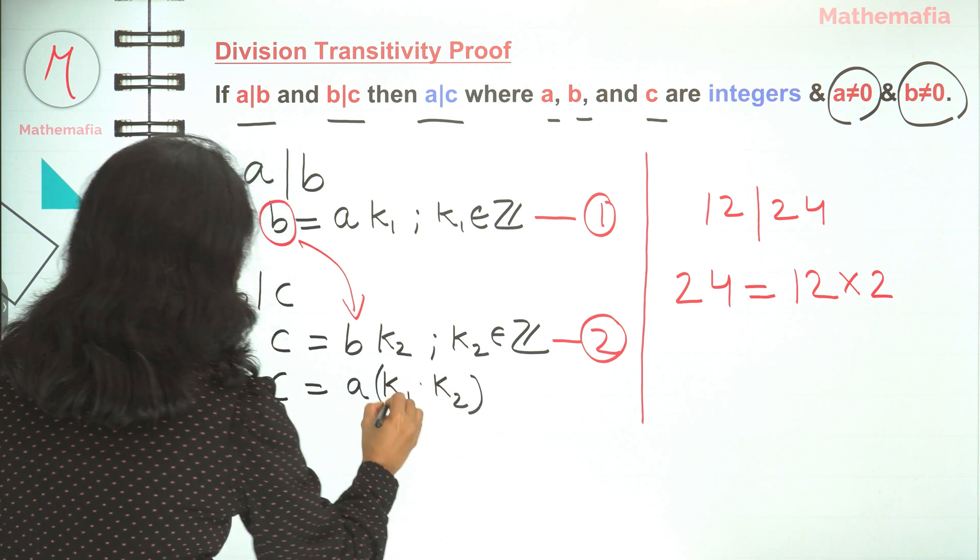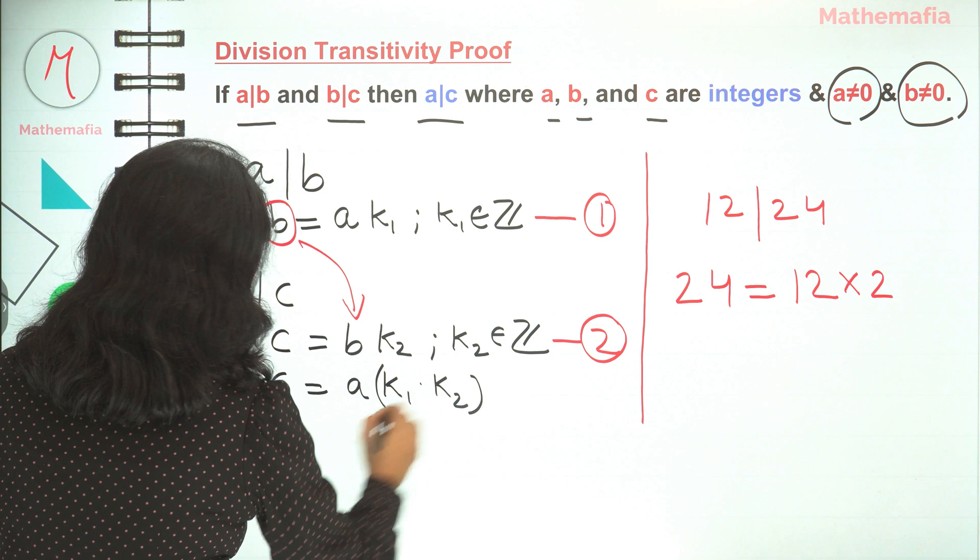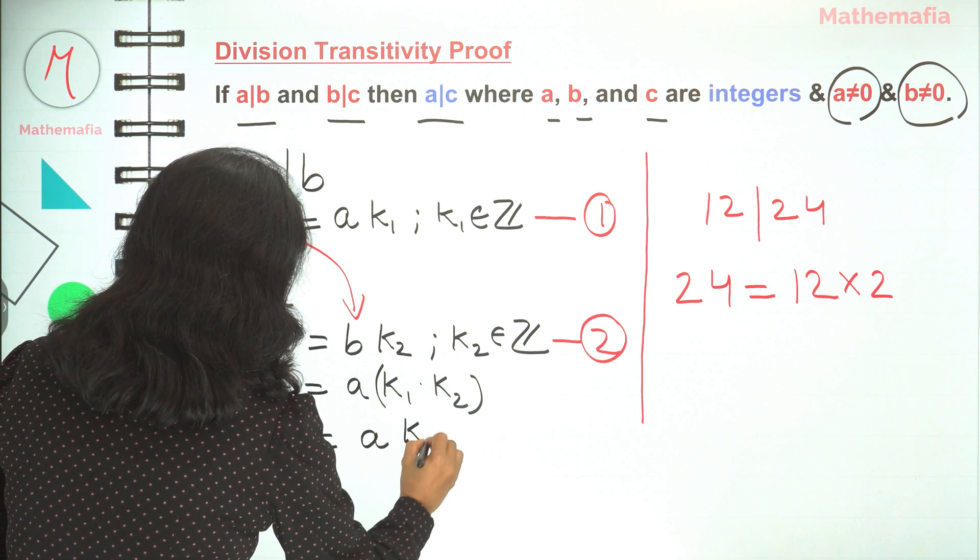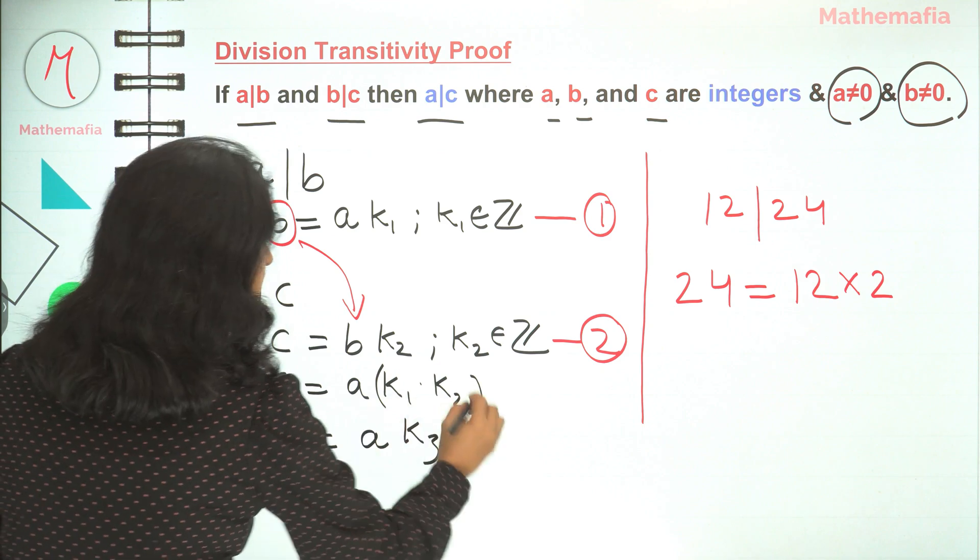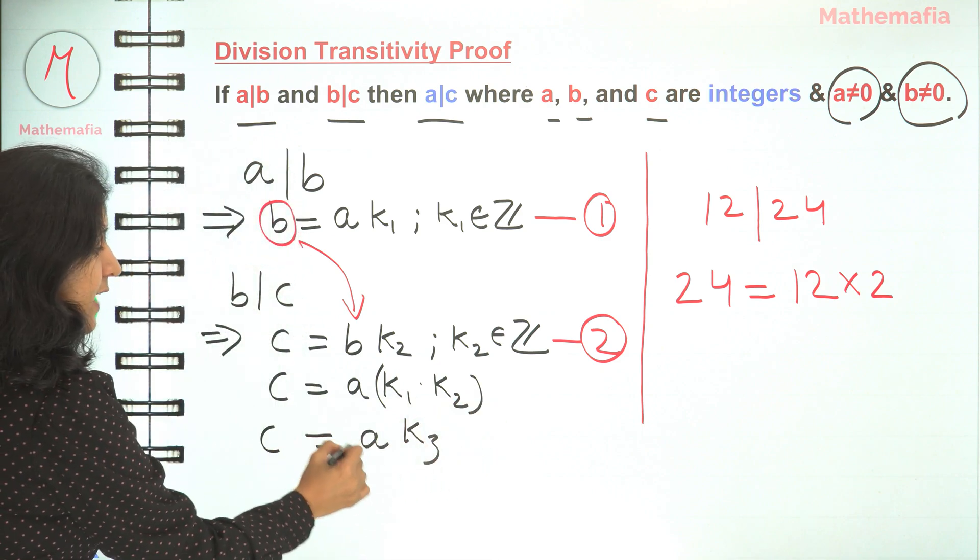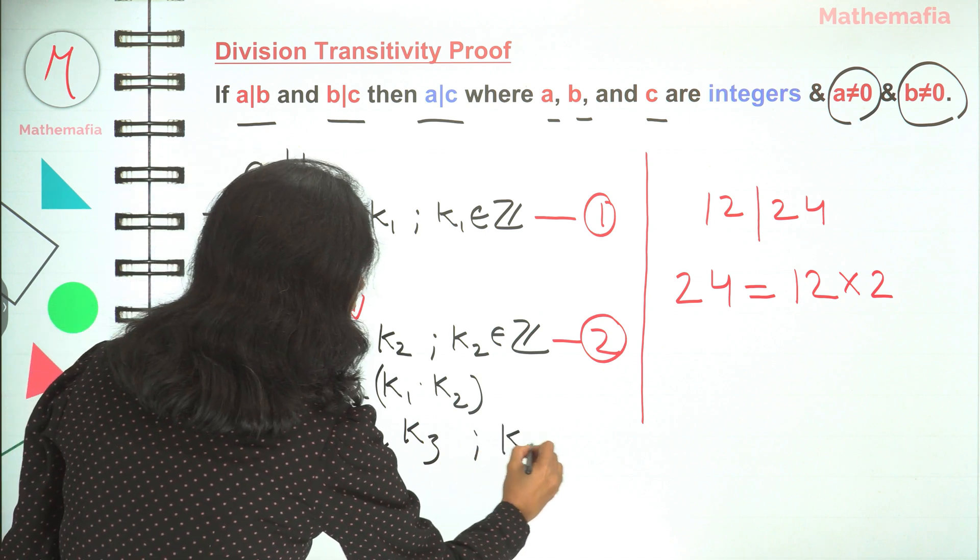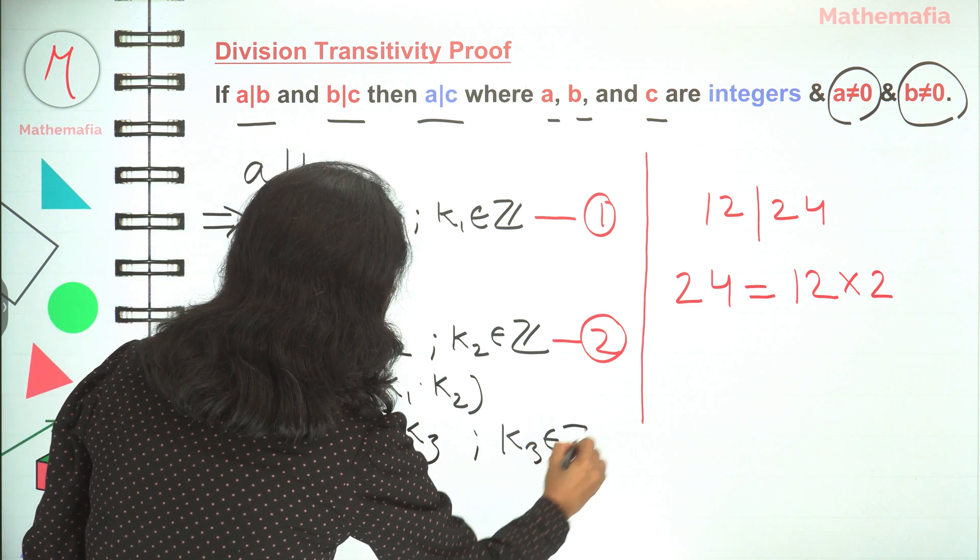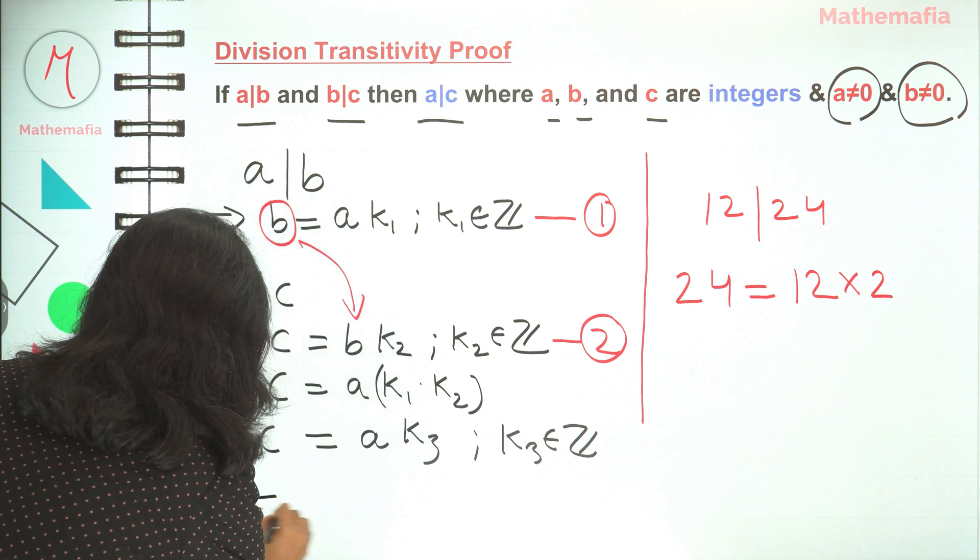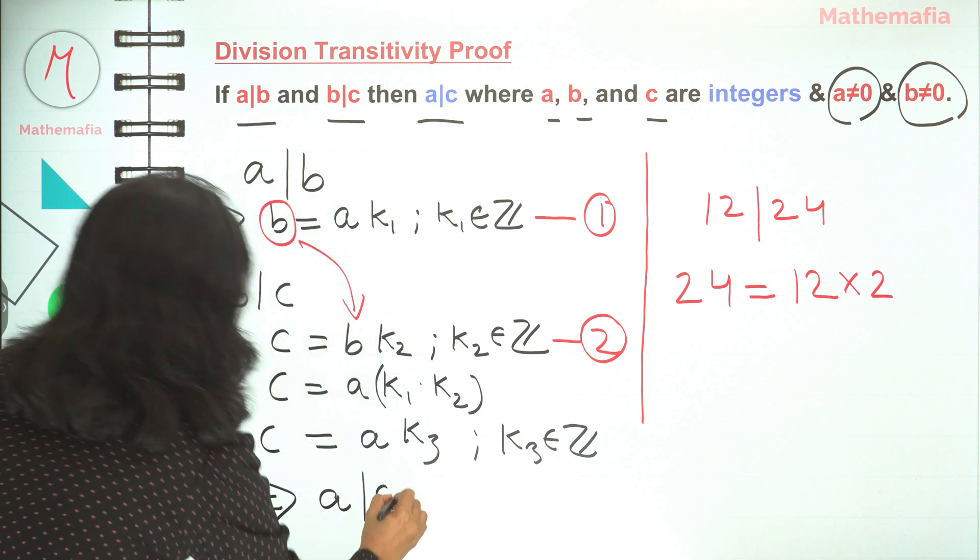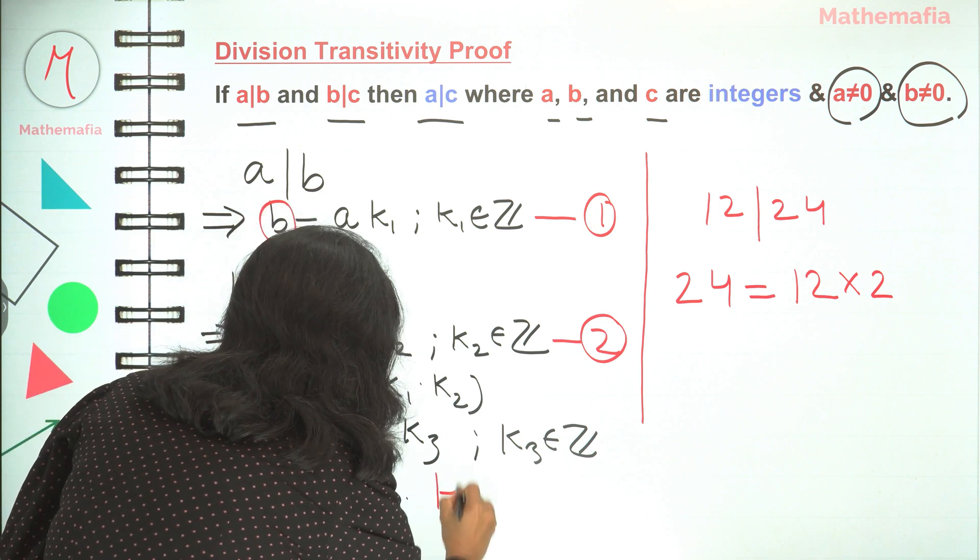Now k1 and k2 were integers, so k1 times k2 would also be an integer. Let's call that k3. So now we have written c as the product of a with another integer. So from here we can conclude that a divides c. Hence proved.